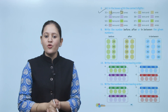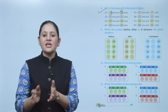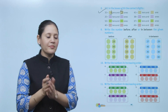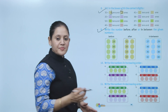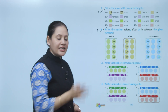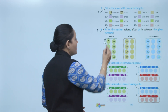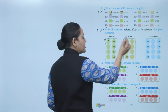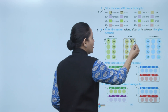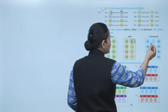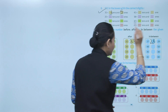Next, write the number before, after, or in between the given numbers. What comes before 28? That is 27. What comes after 32? That is 33. What comes between 27 and 29? That is number 28.